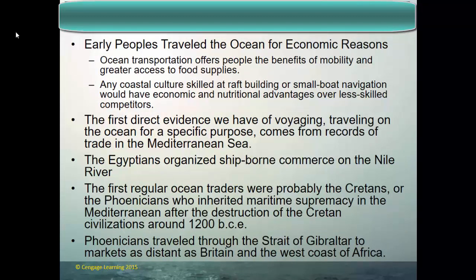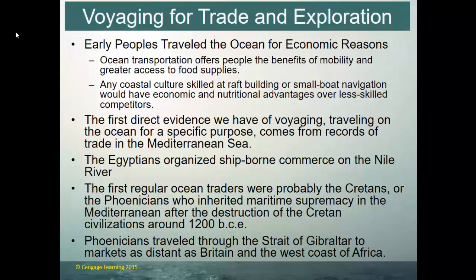Early people traveled the ocean for economic reasons — it offered mobility and greater access to food supplies. The first direct evidence of voyaging comes from the Mediterranean Sea. The Egyptians organized shipborne commerce on the Nile. The first regular ocean traders into the Mediterranean were the Cretans, then the Phoenicians, who took over maritime supremacy in the Mediterranean after the destruction of the Cretan civilization around 1200 BCE. The Phoenicians traveled to the Strait of Gibraltar and out into the Atlantic Ocean, making it as far as the British Isles and down the west coast of Africa.